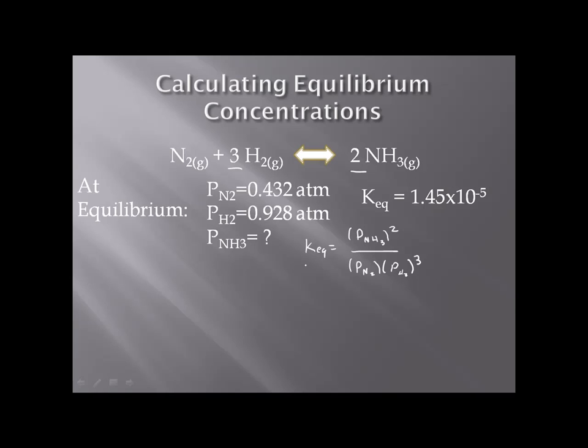So using this equation, let's draw it out here. K_eq equals 1.45 times 10 to the minus 5. That's going to be equal to x squared, because we're looking for our partial pressure of ammonia. We don't know that, that's going to be our x value right here. Over our partial pressure of nitrogen, which is 0.432, times our partial pressure of hydrogen, which is 0.928.